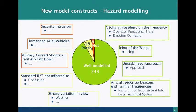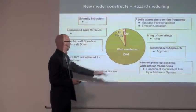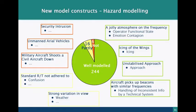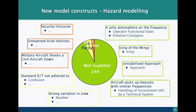After this additional set of models, almost all hazards could be well modelled, with some partly modelled or dealing with security, unmanned aerial vehicles, or military aircraft for which we did not have constructs. For the large majority of hazards, we now have constructs. As noted: unmanned aerial vehicles are not modelled well, but a jolly atmosphere on the frequency is modelled well — we think the operational functional state model and emotion contagion, i.e., the influence of emotions between human operators, provides a good basis to describe a jolly atmosphere on the frequency.